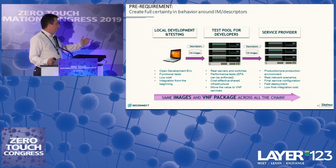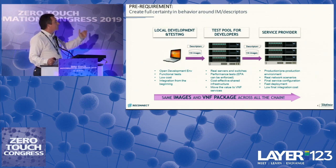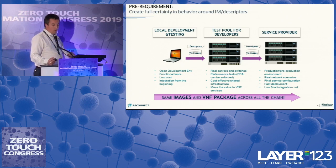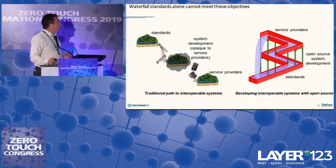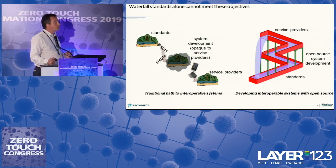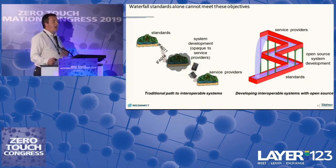If you preserve the same images and same VNF packages across the whole chain, you can be sure things are going to work. The problem is how to achieve this — how to have a common information model good enough to model all these aspects. If the industry expects that standards can lead us here, maybe we can wait a decade or more. Standards are not enough. In many occasions, standards are reached through consensus, and when there are different views — because of technical disagreements or because companies are trying to defend IPRs or product positioning — what you are able to reach consensus on is very minimal, and that is not enough for the interesting real use cases.